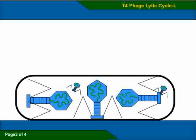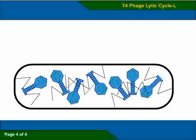Once assembled, the new viruses direct production of lysozyme, an enzyme to digest the bacteria's cell wall.